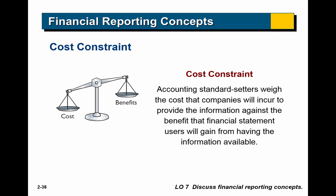Under the cost constraint, accounting standard setters weigh the cost companies will incur to provide information against the benefit financial statement users will gain from having it. In other words, it's important that we report things, but there has to be a reasonable cost-benefit balance.